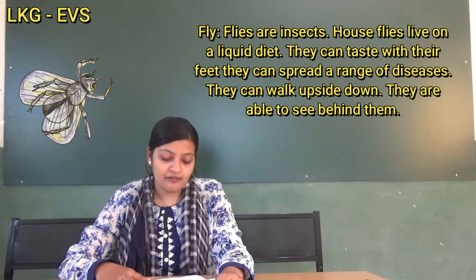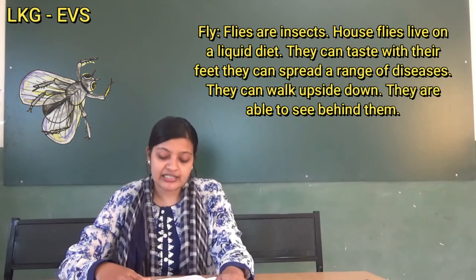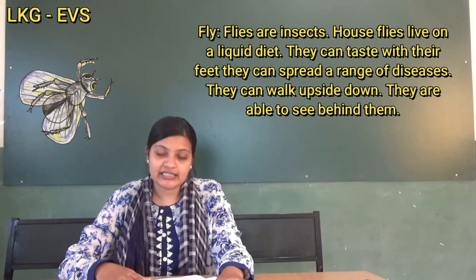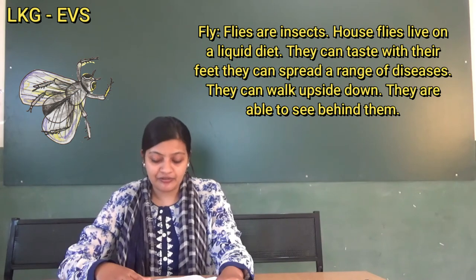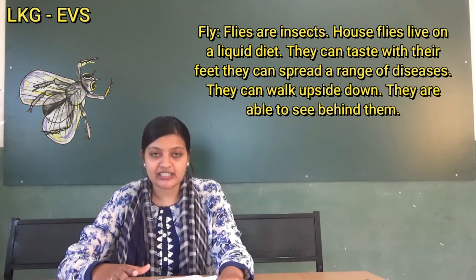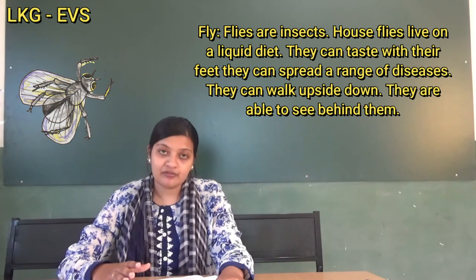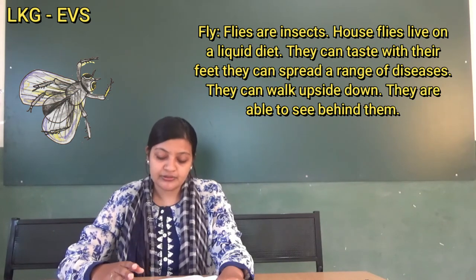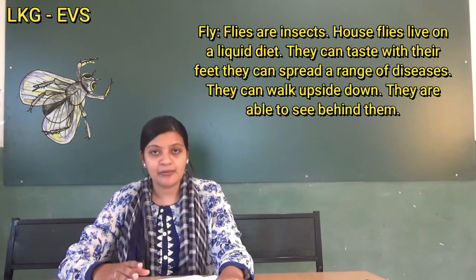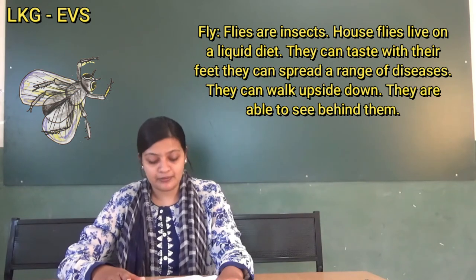Next, F-L-Y. Fly: a small insect. A housefly survives on a liquid diet. They can taste with their feet, spread a range of diseases, walk upside down, and are able to see behind them.